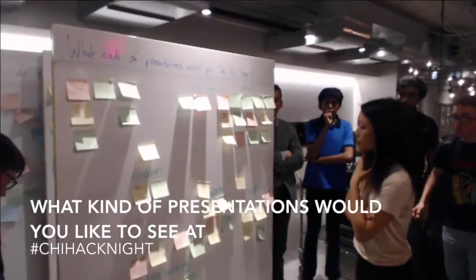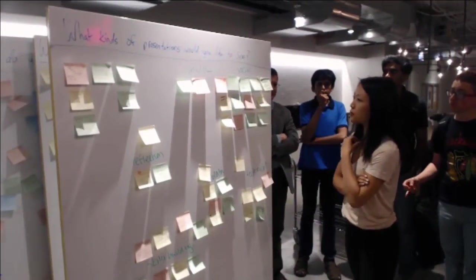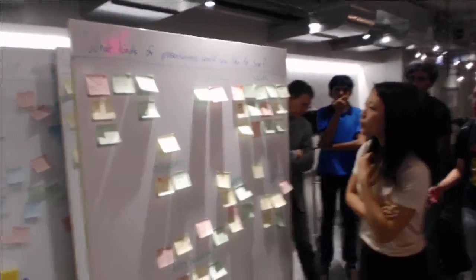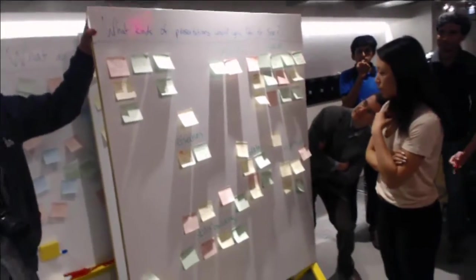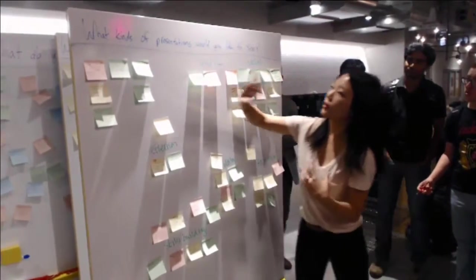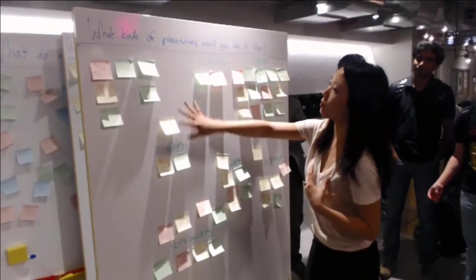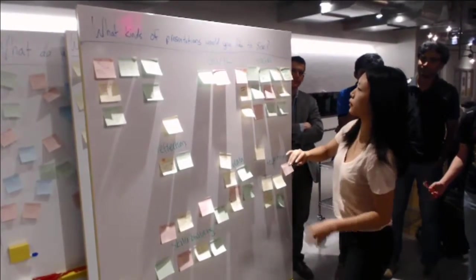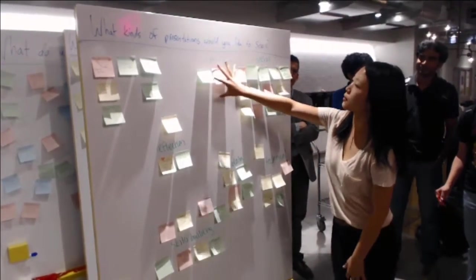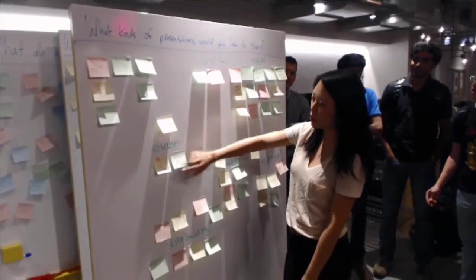So this one was interesting in that there weren't specific sticky notes that had a lot of plus ones. Most of them had one or two plus ones, but we did group them. There's some miscellaneous ones here that don't really fit into a group, like bicycle-related stuff and a project forum. This mini-cluster is Chicago, Illinois stuff.